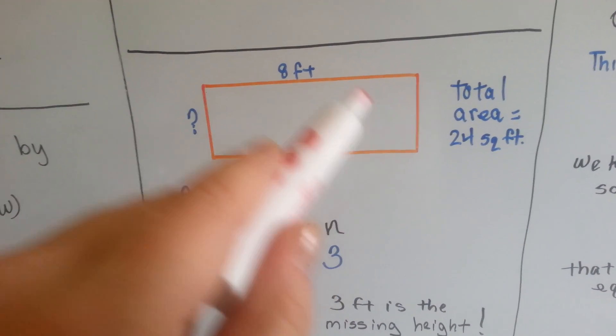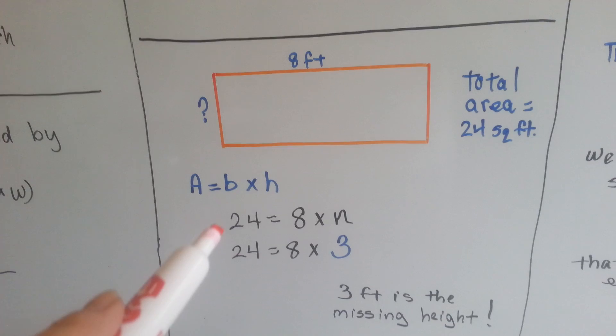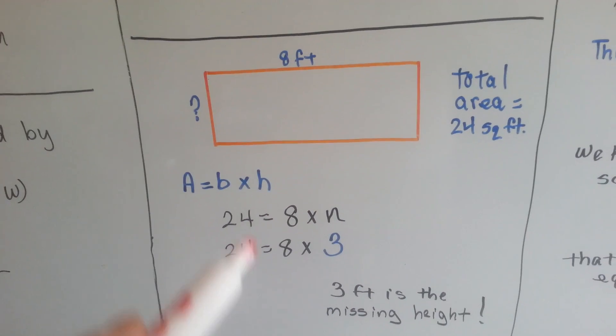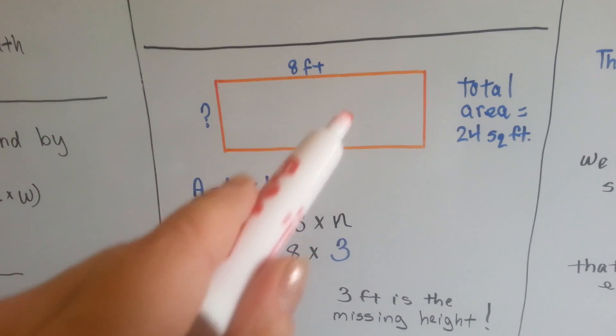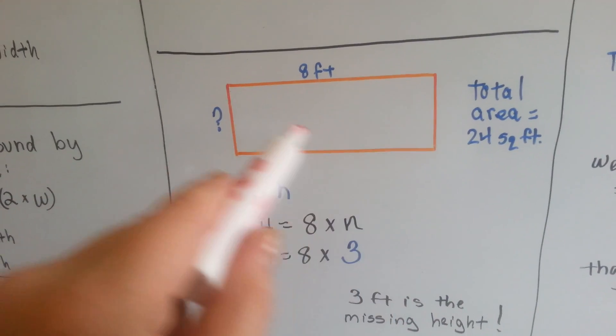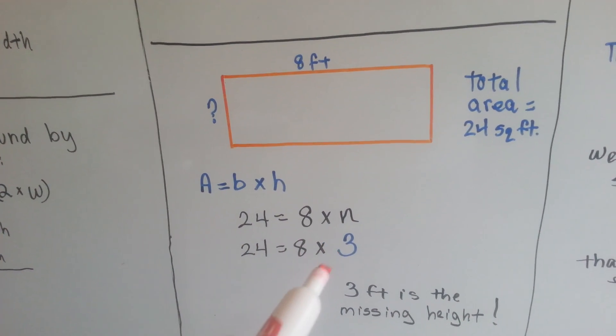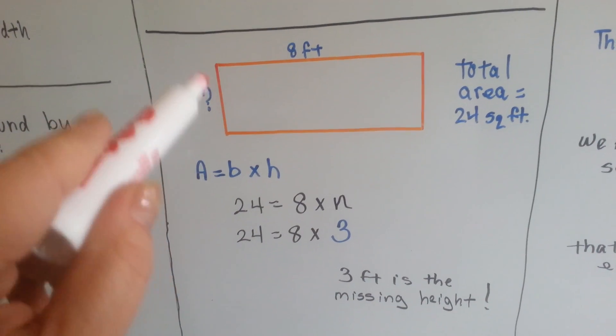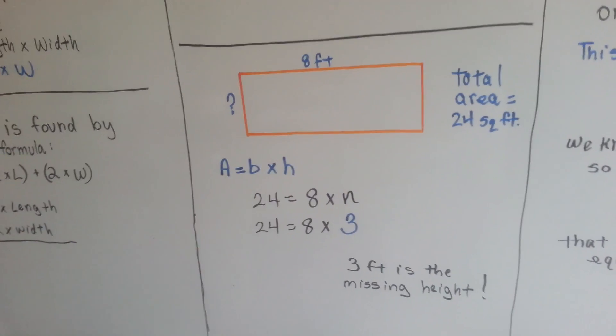It's a rectangle, so this side is 8 feet and that side is 8 feet. So 24, the total, is equal to 8 times n. 8 times something is equal to the 24 inside area. 8 times 3 is 24, so we know 3 feet is the missing height. See how we use the formula to do that?